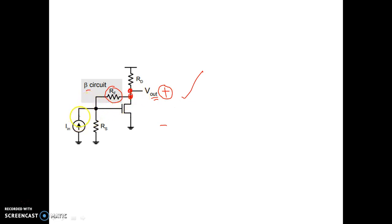And see, this is the current entering from the function generator that will come here and find one node, then it will divide into two parts. One will flow through RF and some will be input for this circuit.